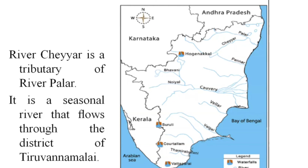River Cheyyar is a tributary of River Palar. It is a seasonal river that flows through the district of Thiruvannamalai.